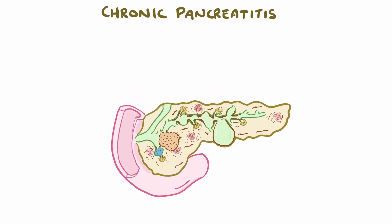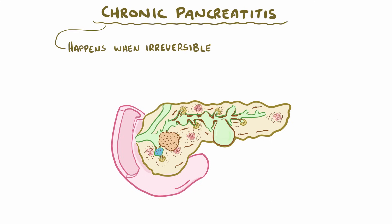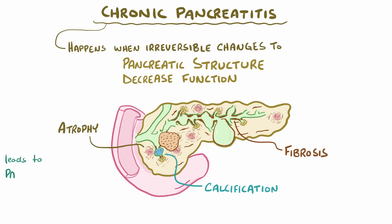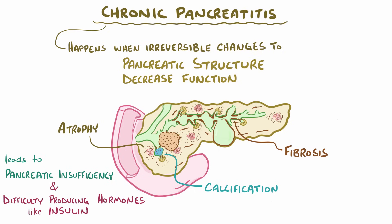As a quick recap, chronic pancreatitis happens when irreversible changes to the pancreatic structure, like fibrosis, atrophy, and calcification, begin to decrease the functions of the organ. Eventually, this leads to pancreatic insufficiency, which makes it difficult to digest food, as well as the destruction of alpha and beta cells, which makes it difficult to produce hormones like insulin.